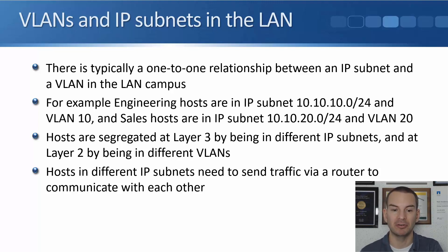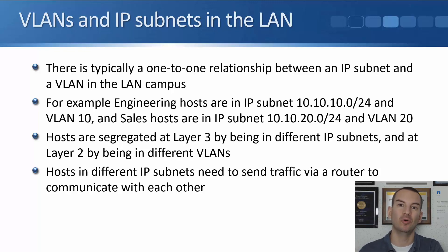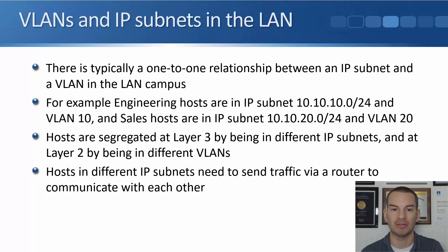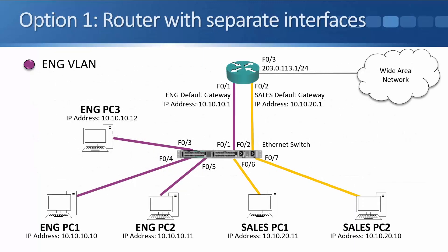Hosts in different IP subnets need to send traffic via a router to communicate with each other. In the last section we covered all the Layer 2 VLAN configuration, but hosts in different VLANs weren't able to communicate. So let's look at how to fix that — the first option is a router with separate physical interfaces in each VLAN.